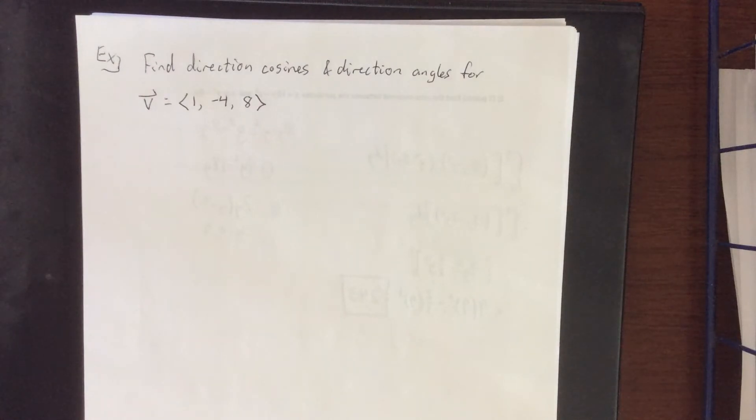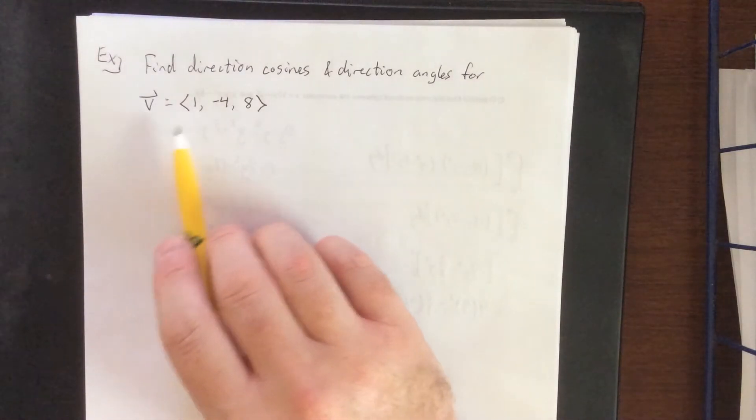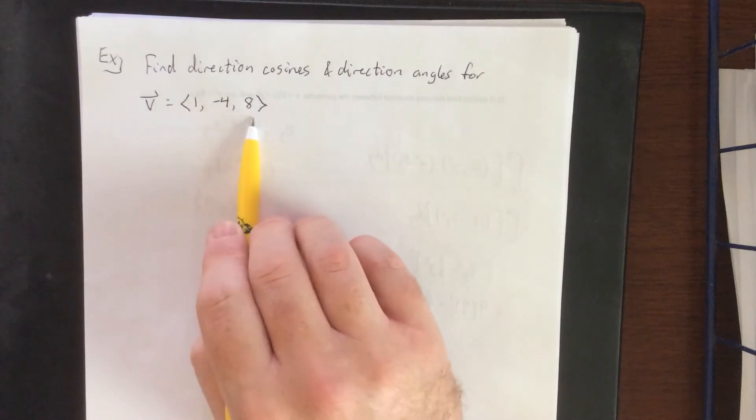Let's do an example where we're finding direction cosines and direction angles. First, we'll define a vector in three dimensions as vector v being the vector (1, -4, 8).